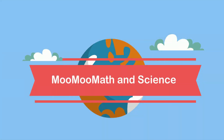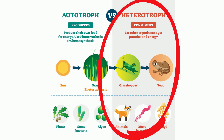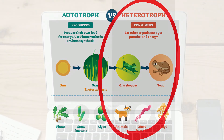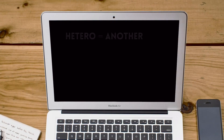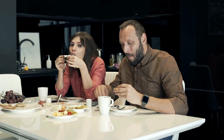Welcome to Moo Moo Math and Science and Heterotrophs. Heterotrophs are organisms that get their energy from other organisms. The word heterotroph is derived from hetero, which means another, and trophic, which means nutrition. Therefore, an organism that is a heterotroph gets their nutrition by consuming other organisms.